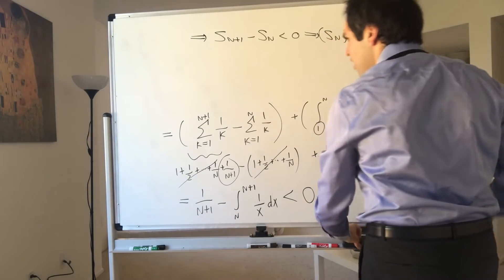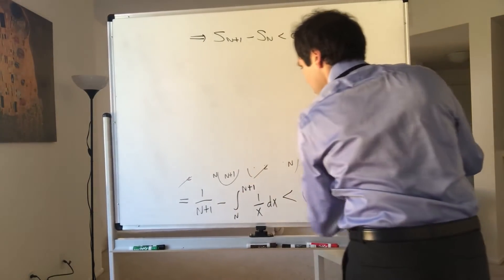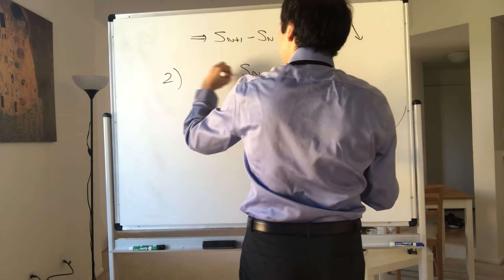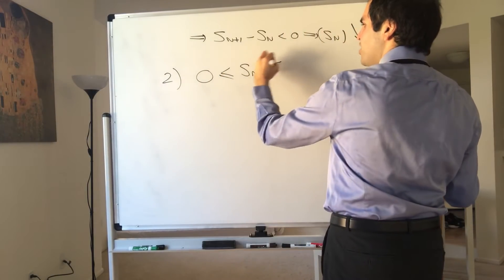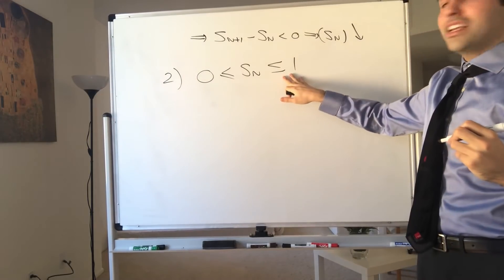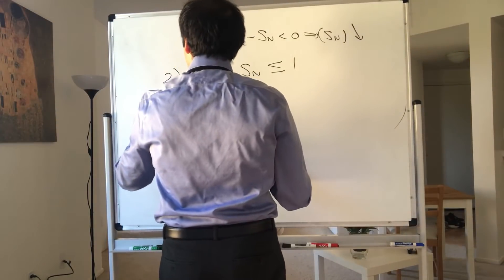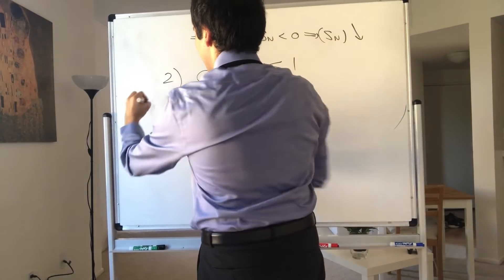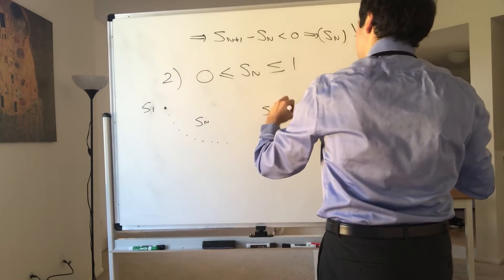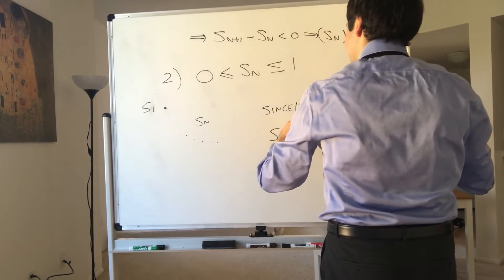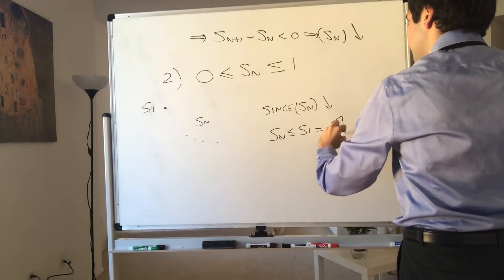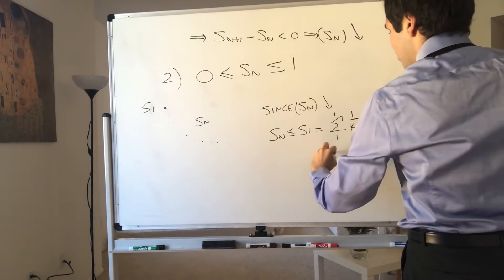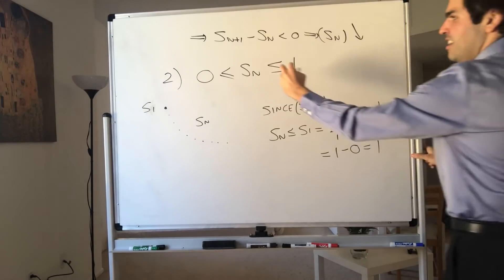We have one ingredient: S_n is decreasing. For the other ingredient, let's show S_n is greater than or equal to zero. But actually, for fun, let's show something slightly stronger: S_n is less than or equal to one. Since S_n is decreasing, S_n is definitely less than its first value. Since S_n is decreasing, S_n is less than or equal to S_1. S_1 is the sum from k equals one to one of one over k minus the integral from one to one of one over x dx, which is just one minus zero, equals one. Therefore S_n is less than or equal to one.